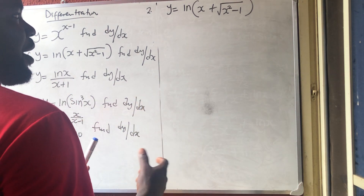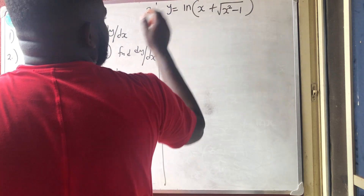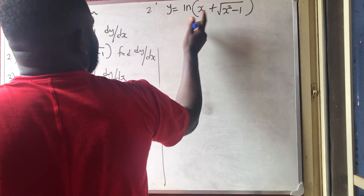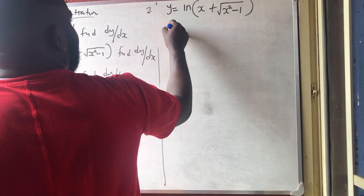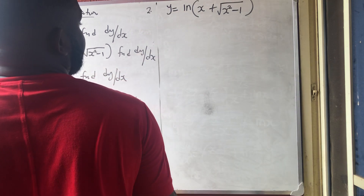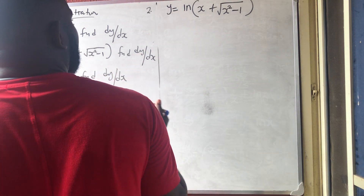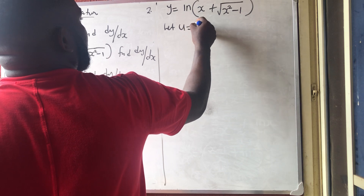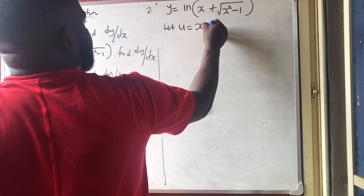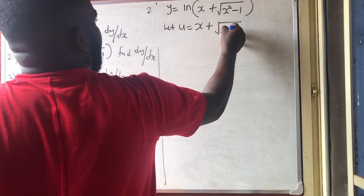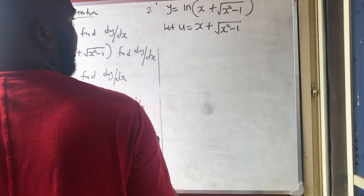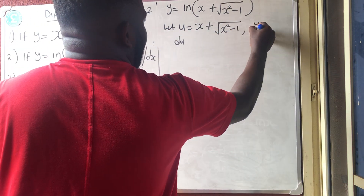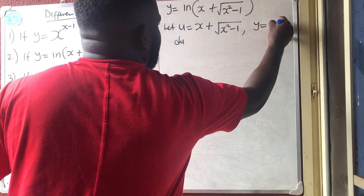Let me use the substitution formula. Let u equal x plus the square root of x squared minus 1, so y equals ln u. We need du/dx. The derivative of x is 1, and the square root of x²−1 is another chain rule application — it's (x²−1)^(1/2).